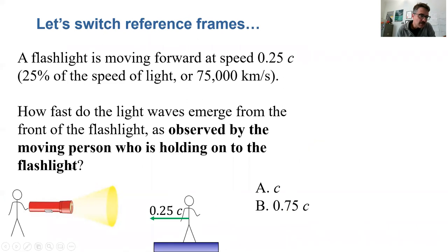But now let's look at a different reference frame. Let's imagine it from the point of view of the person who's holding the flashlight. So now here's that observer on the earth. That was you. This is the astronaut. The observer on the earth is now moving to the left at 0.25c. The person holding the flashlight is just watching light come out of this flashlight. So the question is how fast do the light waves emerge from the front of the flashlight as observed by the moving person who is holding the flashlight? Do you think it's c or do you think they'll see the light coming out slower at 0.75c?